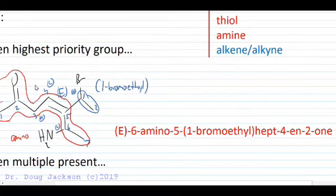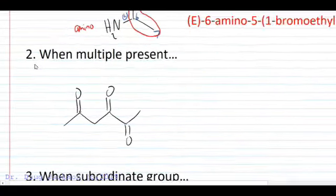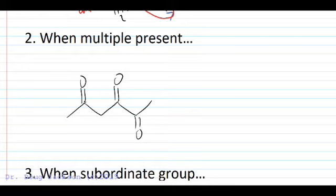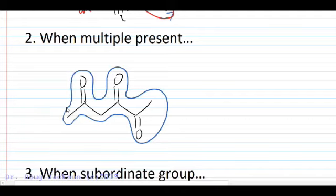When multiple ketones are present, we can circle our parent chain here and they're all going to be included. They're not subordinate groups, they are part of the parent chain. We're going to number to lower the first encountered ketone. Well that can be a two no matter which way we go. So then the next one, it's better to have a two three than it is to have a two four. Okay, one two three four five and six. Because there are three we're going to have a trione.